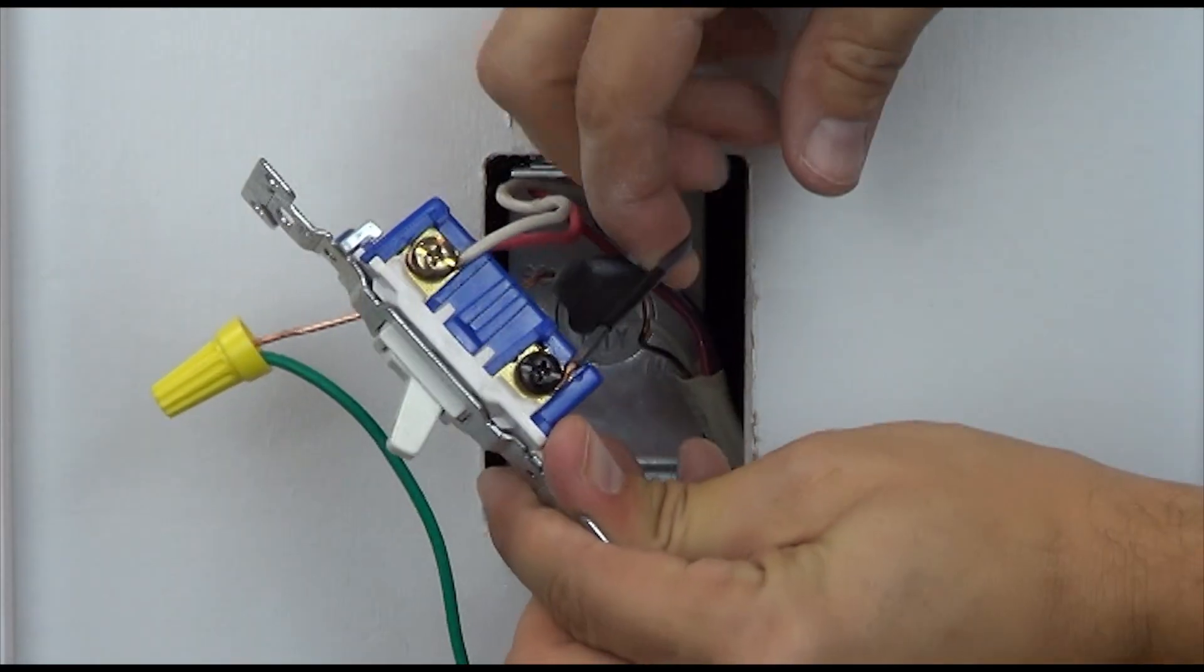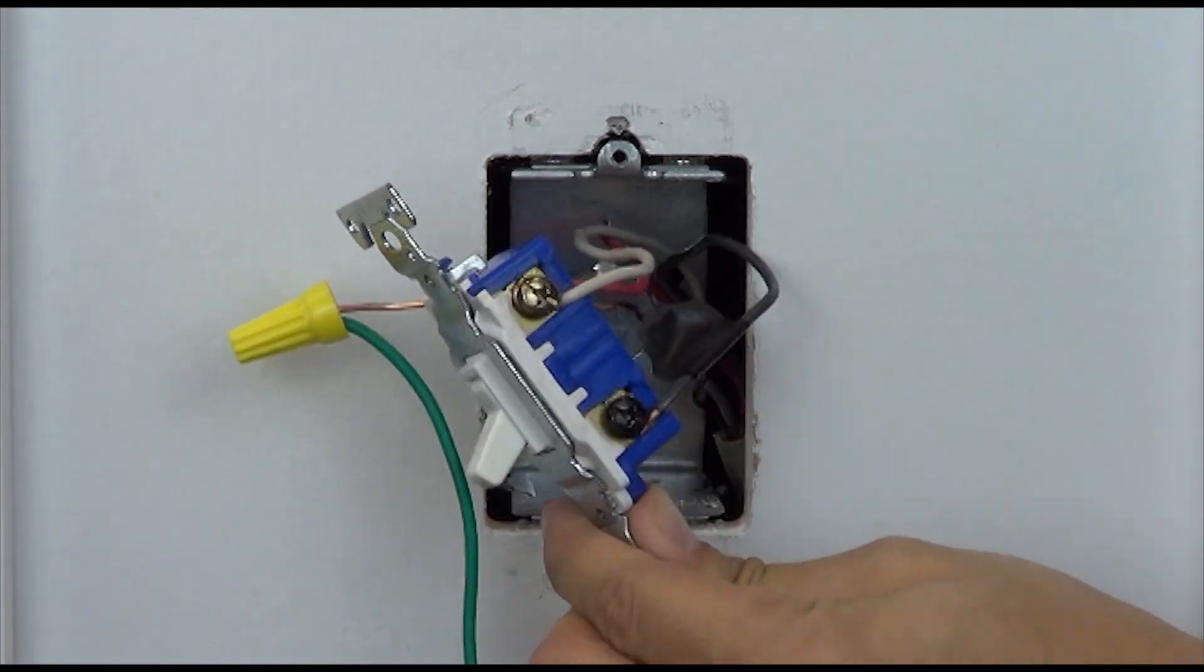Remove the tagged wire from the old switch and connect it to the black colored screw on the dimmer.